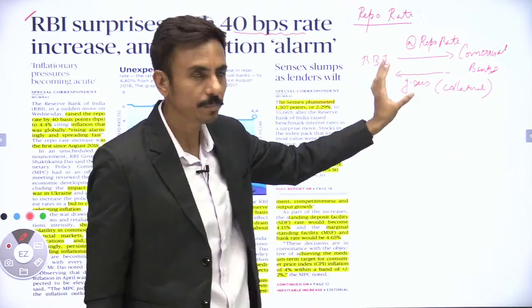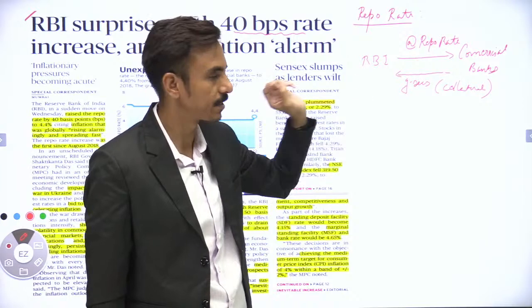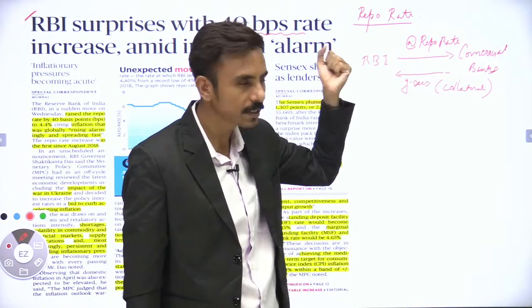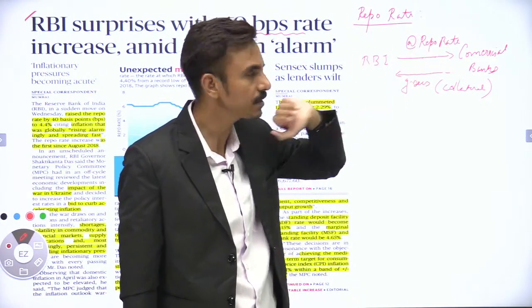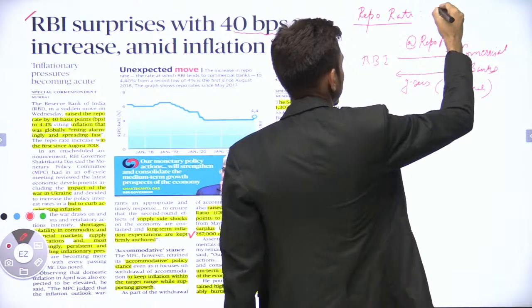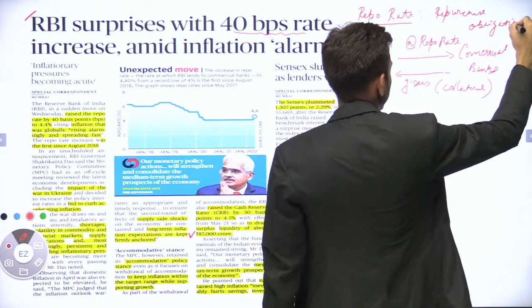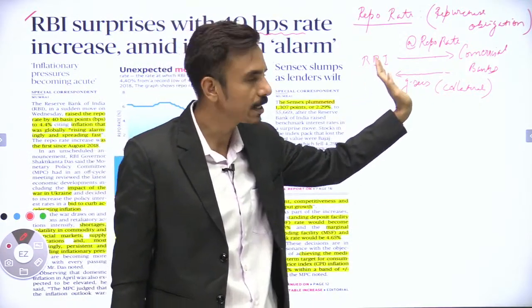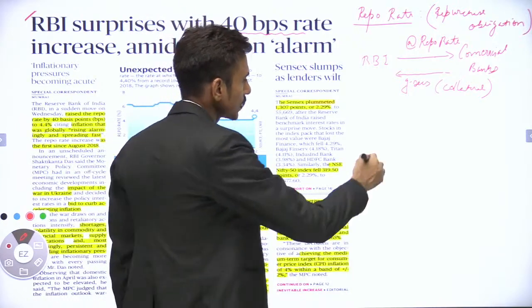When the commercial bank returns the money, RBI returns the government securities. The repo rate is also called repurchase obligation, because the RBI, which has purchased government securities, would sell them back to the commercial banks. So in this sense it is called repurchase obligation.